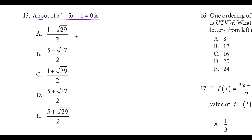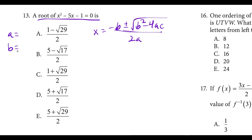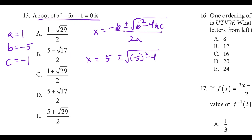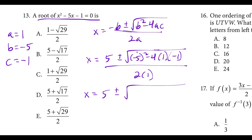Question thirteen: we have to find a root of this quadratic. All the answers are irrational, hinting we should use the quadratic formula: x equals negative b plus or minus square root of b squared minus 4ac, all over 2a. The coefficients are a equals 1, b equals negative 5, c equals negative 1. Plugging in: x equals positive 5 plus or minus square root of negative 5 squared minus 4 times 1 times negative 1, all over 2. That gives 5 plus or minus square root of 25 plus 4, which is 29, over 2. This matches choice E: 5 plus square root 29 over 2.